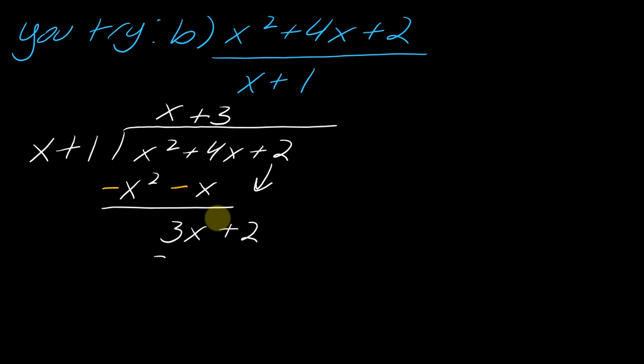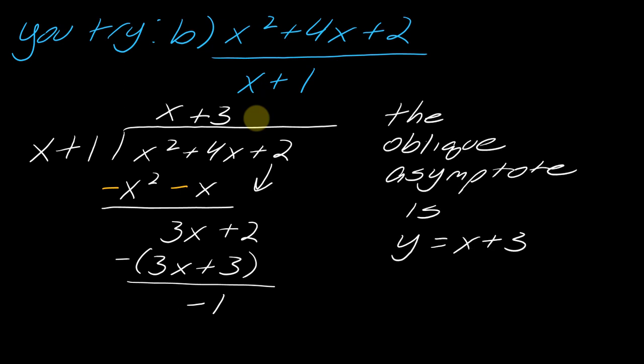So this is going to be x plus 3. Multiply 3 by all of this. So this becomes 3x plus 3. And I need to subtract this all off. So this is actually just going to leave me with negative 1. Once again, I don't really care what this leaves me with. This is the part that I really need. So here's my oblique asymptote, so then I can summarize this as y equals x plus 3.